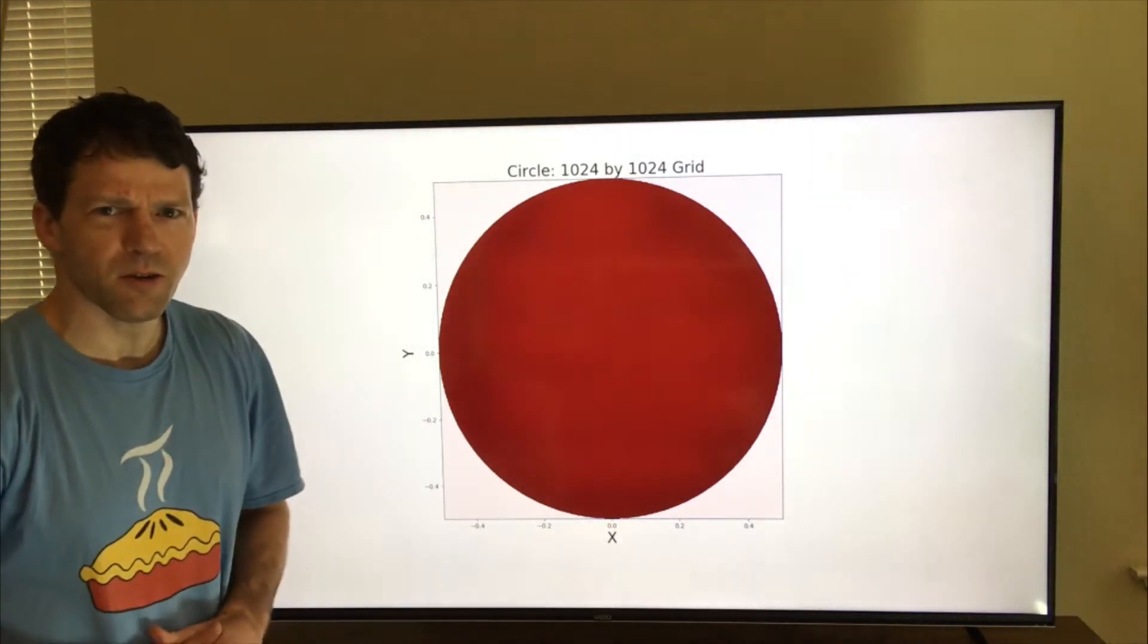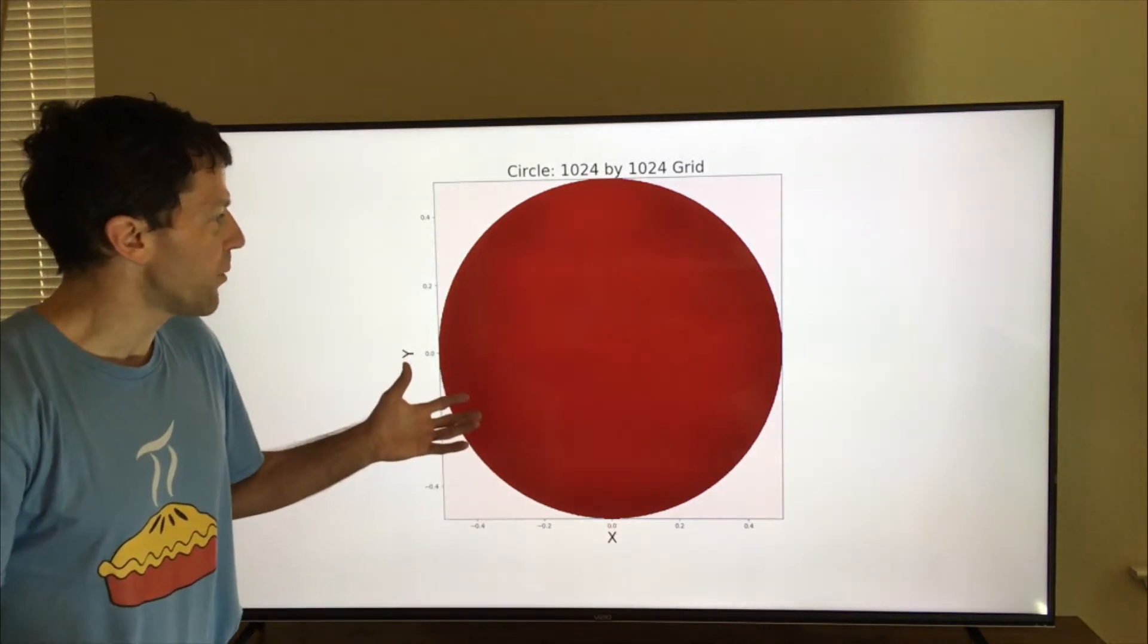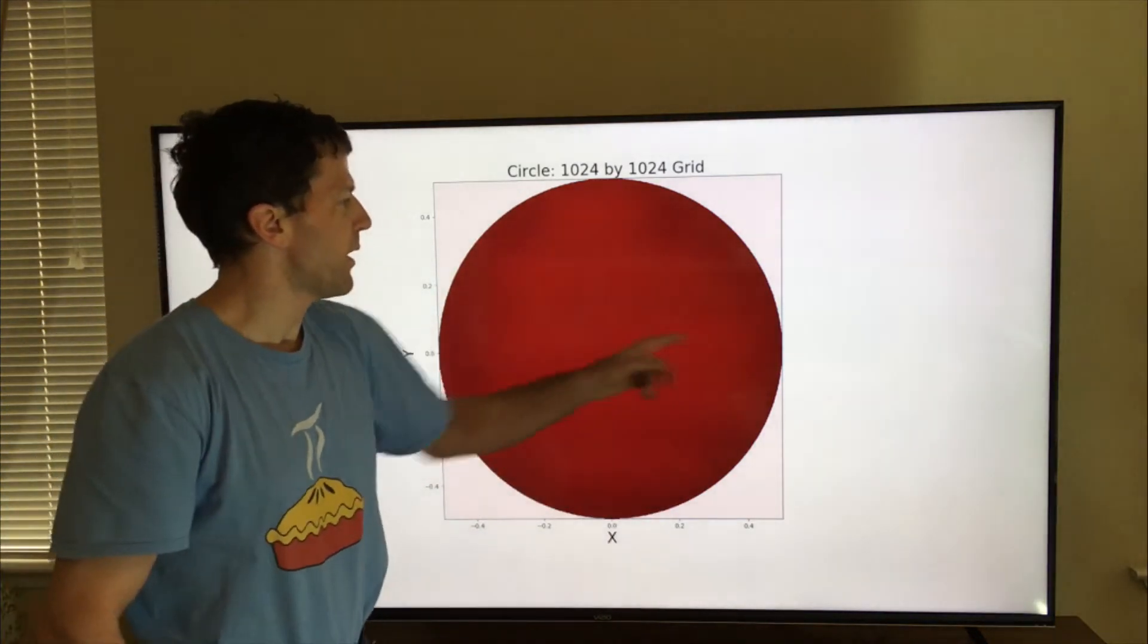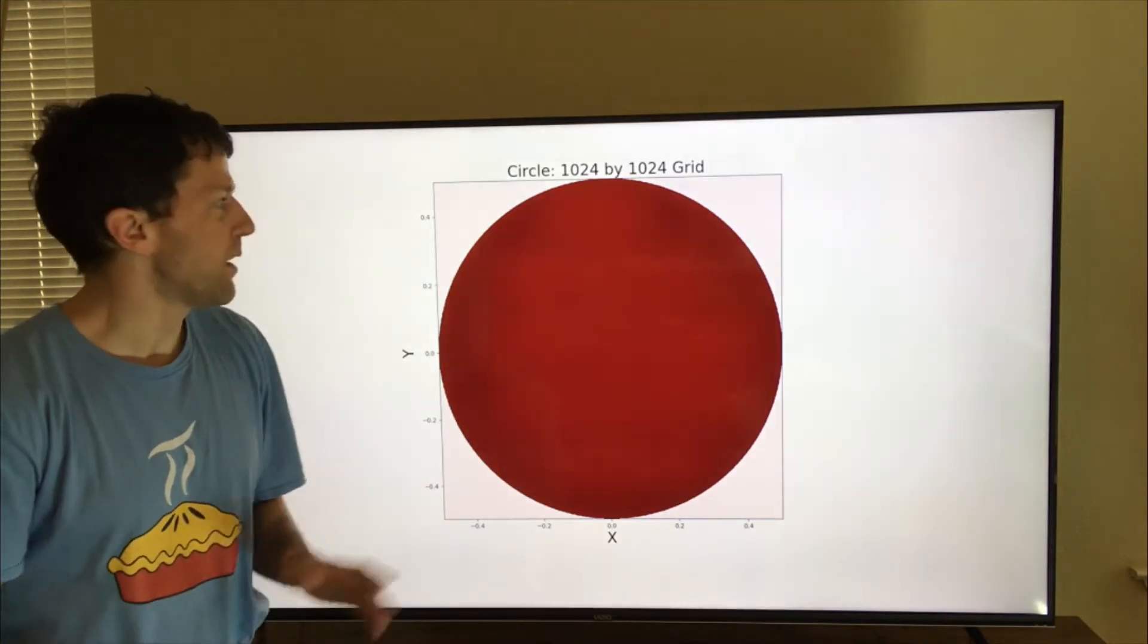1024. Now that looks like a pretty good circle, but it's drawn on a computer. And we have the case that the ratio of the circumference to the diameter is 4 instead of 3.14.